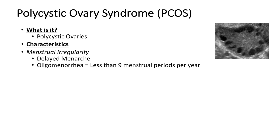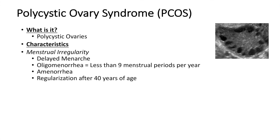And sometimes they can even have amenorrhea, which is no menstrual periods at all — so they just go throughout their life without having any periods whatsoever. But interestingly enough, they can have a regularization after the age of 40. What I mean by that is, a lot of these symptoms such as oligomenorrhea or amenorrhea can actually kind of normalize after the age of 40, so after 40 years of age they can have more regular periods.